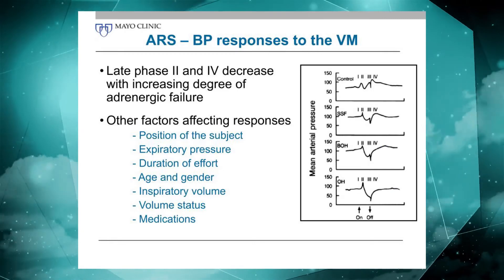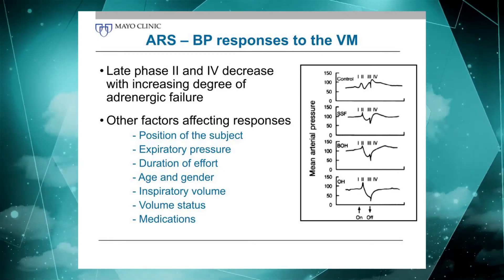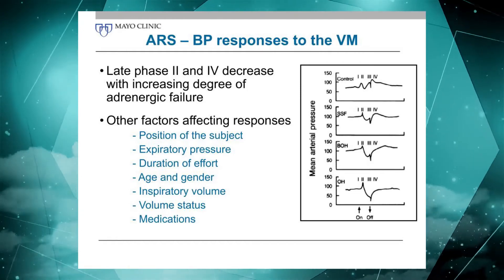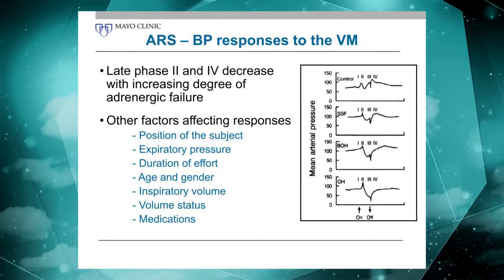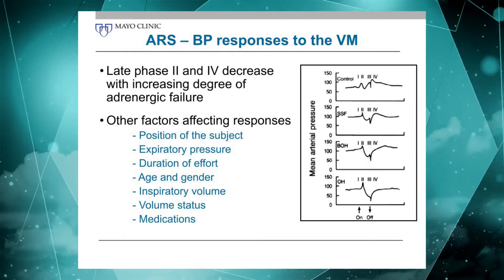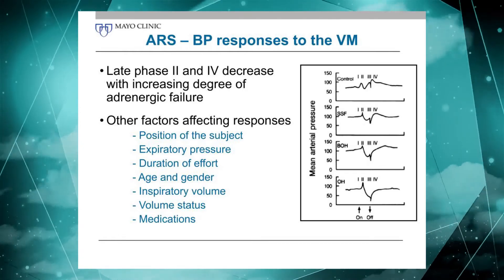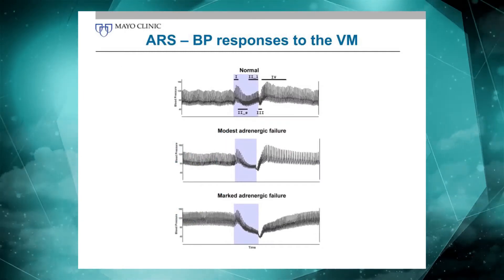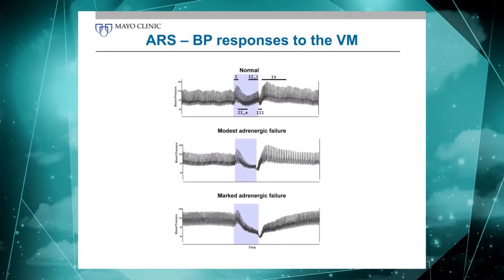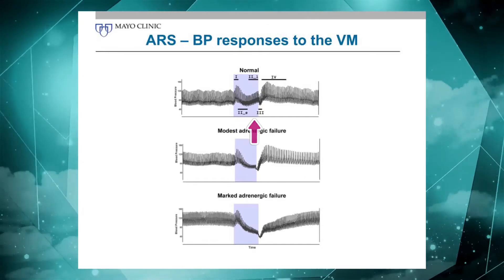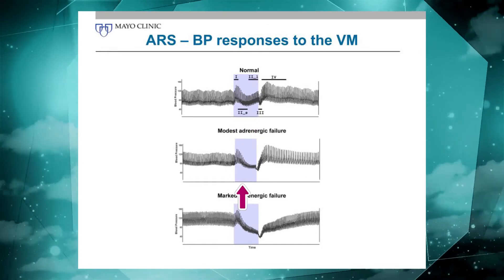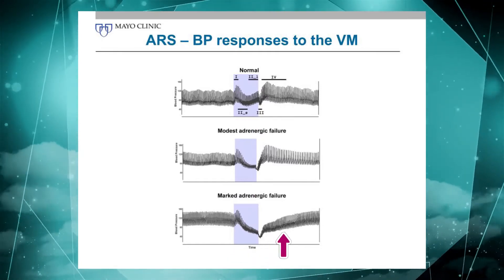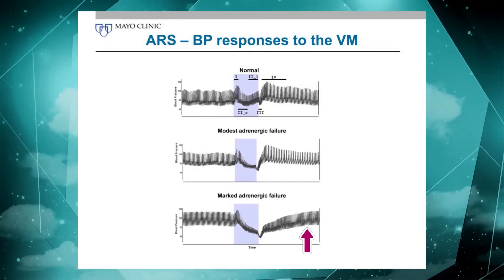There are a number of factors — just like before — that can affect blood pressure responses to the Valsalva maneuver, and those are listed here. Medications cannot be emphasized enough. A few examples are shown here: a normal response on top using beat-to-beat recording, someone with modest adrenergic impairment, and someone with severe adrenergic failure where it takes about 30 seconds for blood pressure to return to baseline.